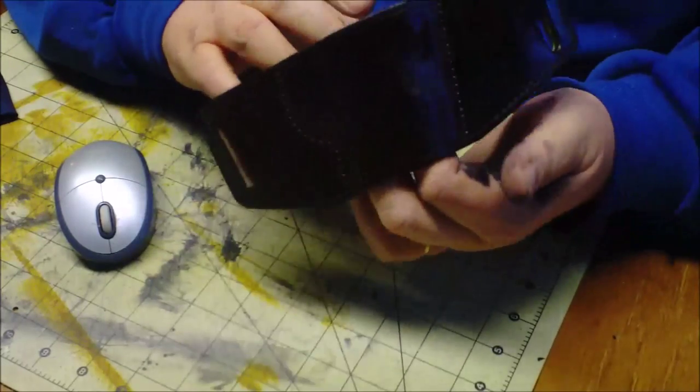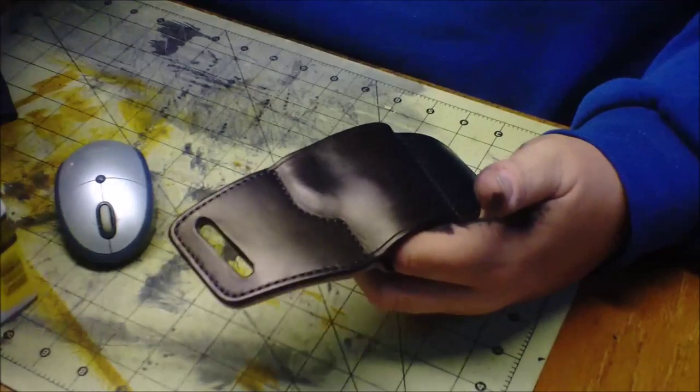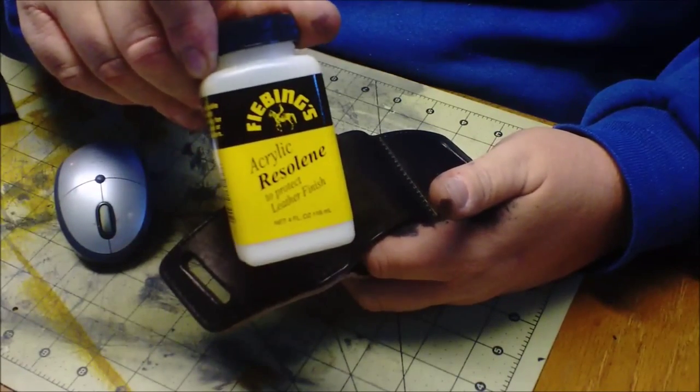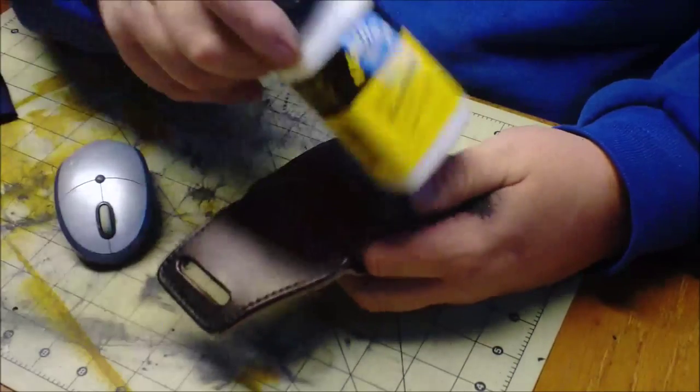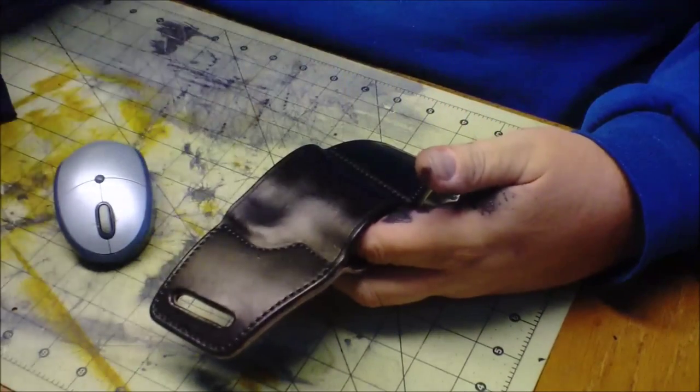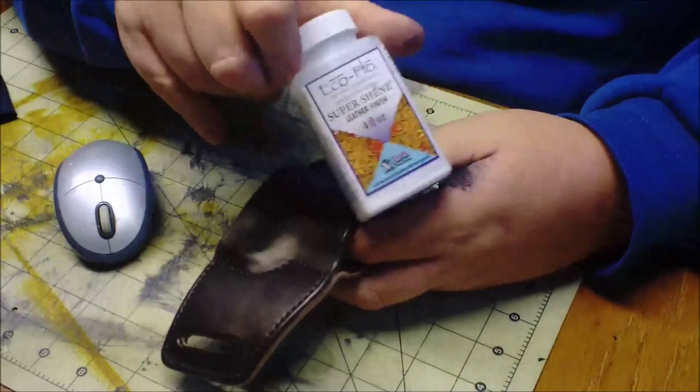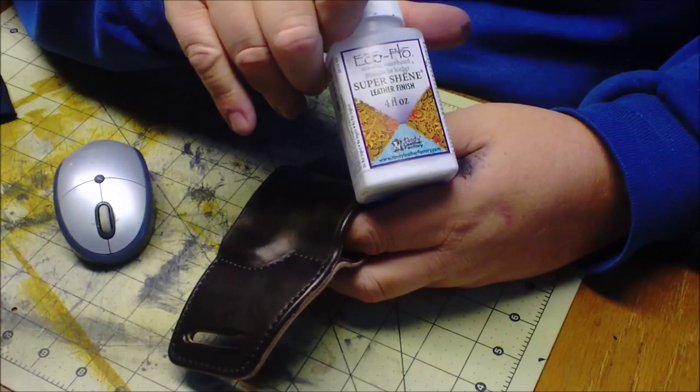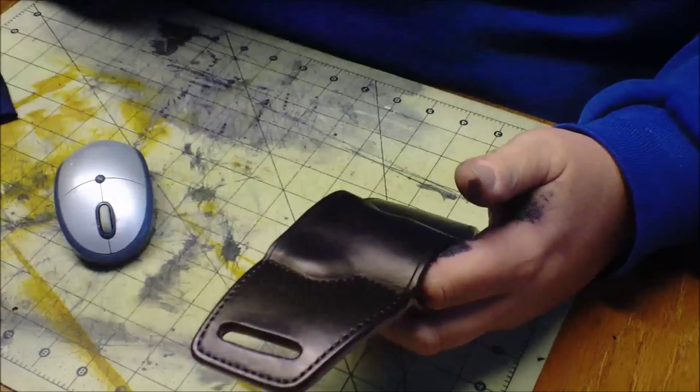I'm going to show you two different finishes. I have the Feebing's acrylic resoline - it's a really durable finish and it works really well for holsters - and I have the Eco Flow Super Sheen which I also like for holsters.